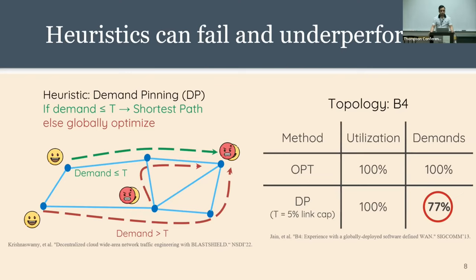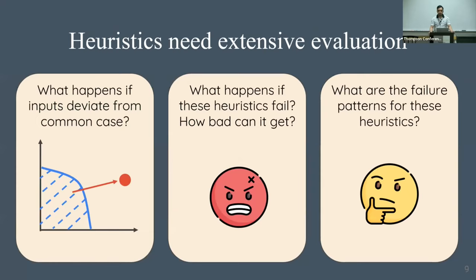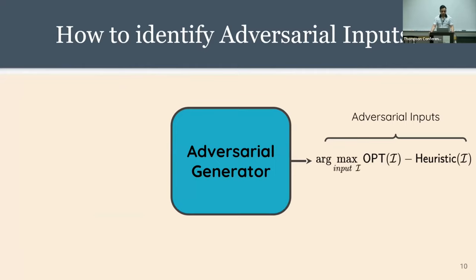We tried demand pruning on the B4 topology on many different workloads, and it works amazingly for most of them. But we found a surprising result: for at least one workload it can be as large as 23% less efficient than the optimal routing. Both demand pruning and optimal can use all available capacity in the network, but while optimal satisfies all demands, demand pruning needs to drop 23% of the traffic. This is a downside of using a heuristic: heuristics help achieve scale and speed but at the cost of performance degradation in some scenarios.